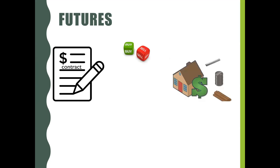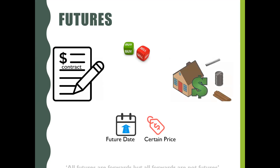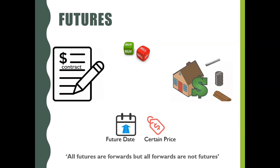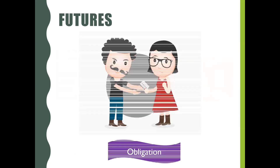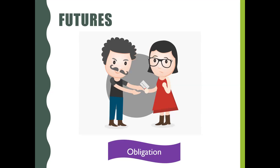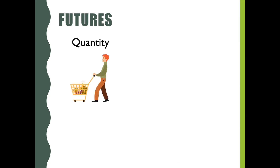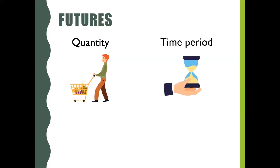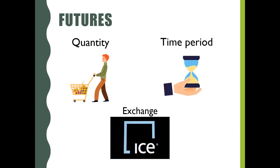What are Futures Contracts? Futures Contracts are similar to Forwards — they are contracts to buy or sell an asset at a certain future date for a certain price. It is an obligation for the buyer and seller to buy or sell and receive or deliver the underlying asset at the expiration date. Futures have standardized quantity or lots, standardized time period or maturity, and they are normally traded on an exchange.